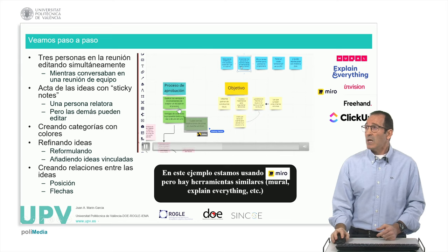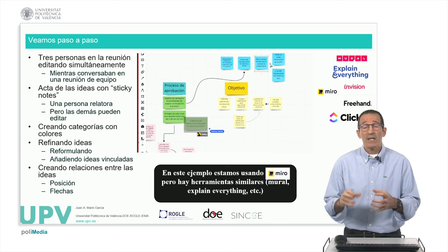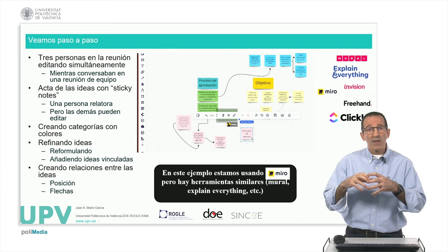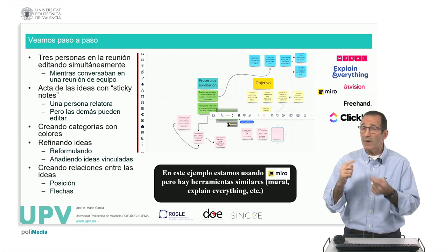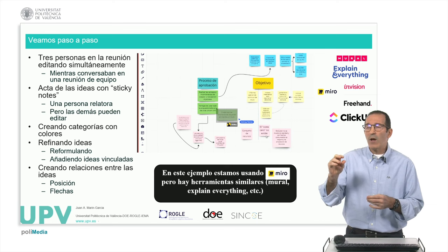As you can see, there's one person doing more of a rapporteur role — moving around, sorting and generating ideas. But anybody can be editing. In fact, at some point two people are editing and transforming the notes they're posting. Each category has its color, so things on the same thematic unit are labeled the same color. This is done in a dynamic way because those interpretations the team is giving are changing and some ideas are being reformulated.